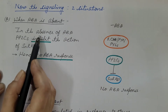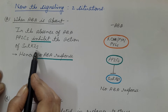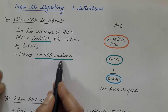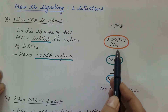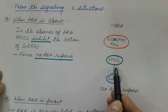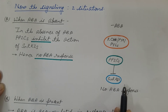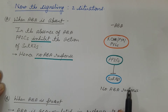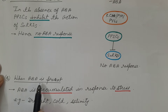There are two situations. First, when abscisic acid is absent: PP2Cs inhibit the action of SnRK2s, hence there is no abscisic acid response. Since there is no ligand, nothing binds to the receptor, and PP2C is free. It then inhibits SnRK2 and does not allow its autophosphorylation. As a result, there is no phosphorylation of downstream targets and hence no abscisic acid response.